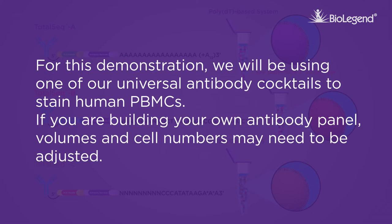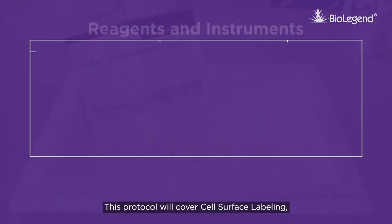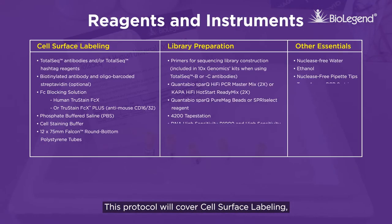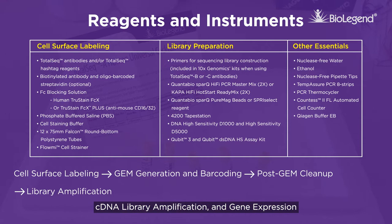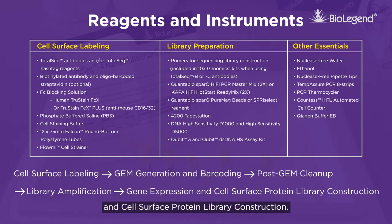For this demonstration, we will be using one of our universal antibody cocktails to stain human PBMCs. If you are building your own antibody panel, volumes and cell numbers may need to be adjusted. This protocol will cover cell surface labeling, GEM generation and barcoding, post-GEM cleanup, cDNA library amplification, and gene expression and cell surface protein library construction.